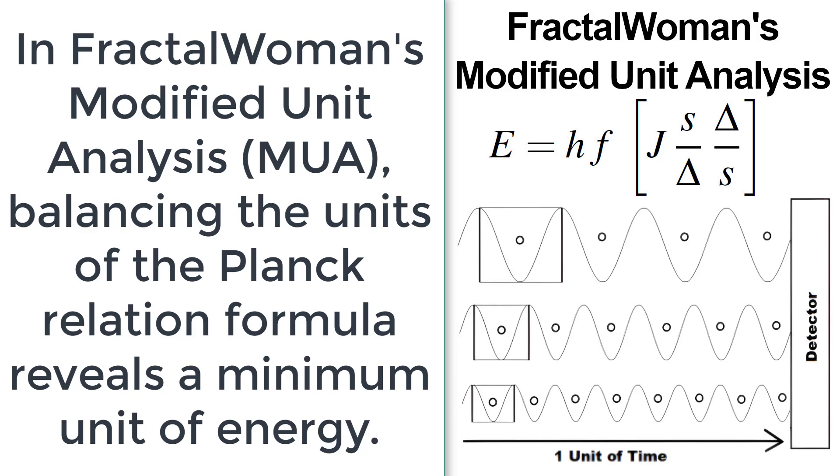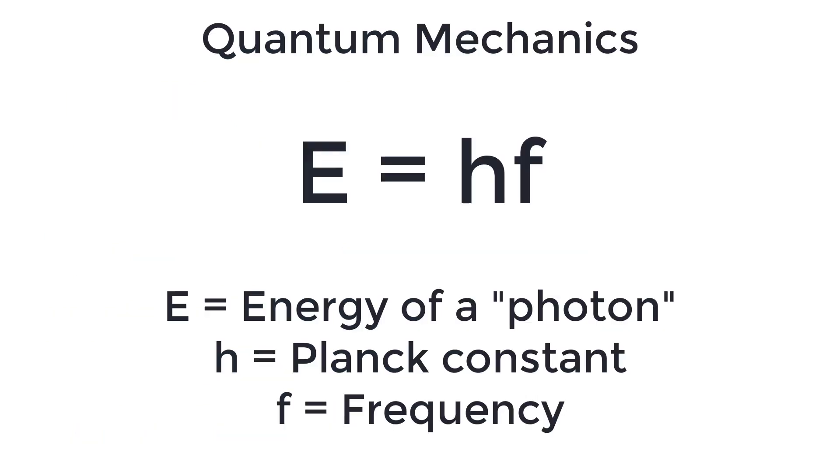In Fractal Woman's modified unit analysis, balancing the units of the Planck relation formula reveals a minimum unit of energy. In quantum mechanics, the energy of a photon is quantized by the following equation.